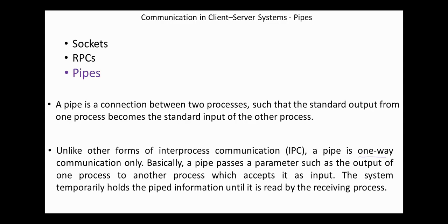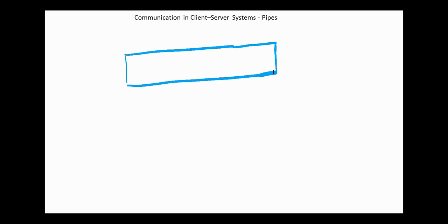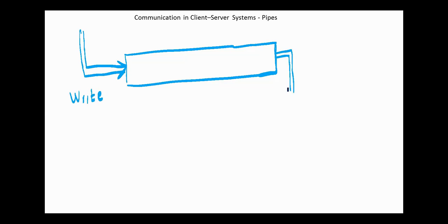The system holds the piped information until it is read by the receiving process. The pipe mechanism can be viewed with a real-time scenario such as filling water with a pipe into some container and someone retrieves it. The filling process is writing into the pipe, and the retrieving process is reading from the pipe.